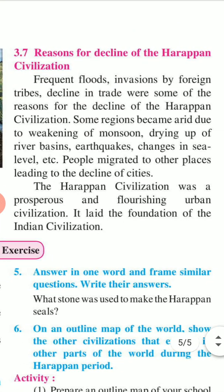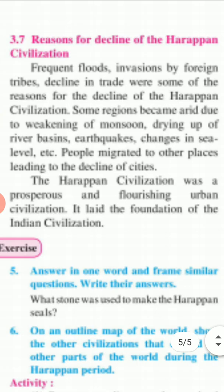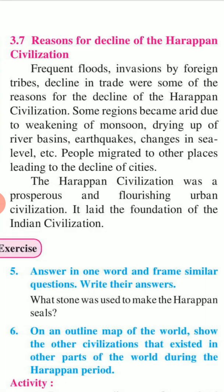The last point of this chapter: reasons for the decline of the Harappan civilization. Frequent floods, invasions by foreign tribes, and decline in trade were some of the reasons for the decline of the Harappan civilization. Some regions became arid due to weakening of river flow, drying up of the river basins, earthquakes, changes in sea level, etc. People migrated to other places, leading to the decline of cities. The Harappan civilization was a prosperous and flourishing urban civilization. It laid the foundation of Indian civilization.